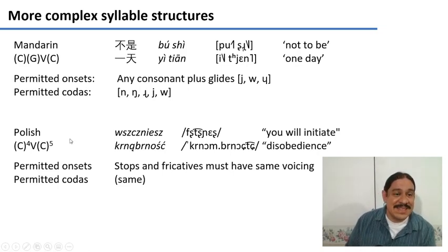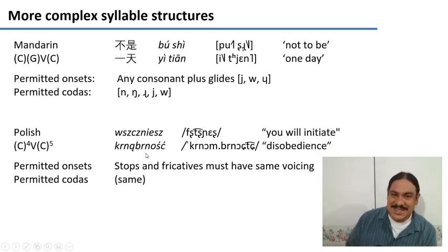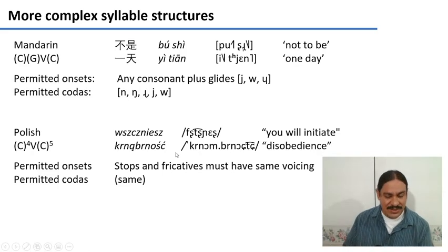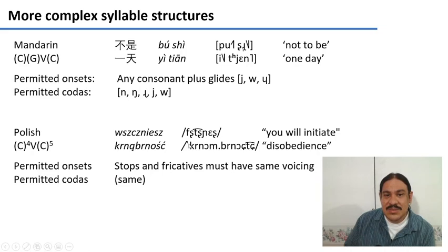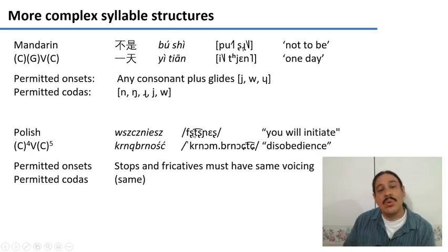Polish is a little bit more permissive. You can have up to four consonants in the onset and up to five consonants in the coda, as in words meaning 'you will initiate' or Knobrnošč, meaning disobedience. You can have relatively complex onsets, but if you have stops and fricatives in the onset, they must all have the same voicing. For example, f, sh, ch are all voiceless. The rule does not apply to nasals, but the stops and fricatives must all be either all voiced or all voiceless.